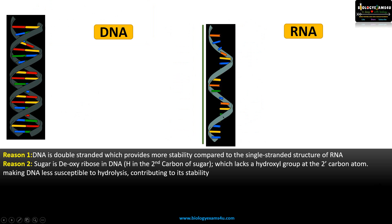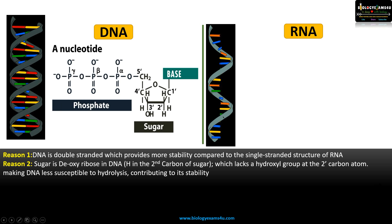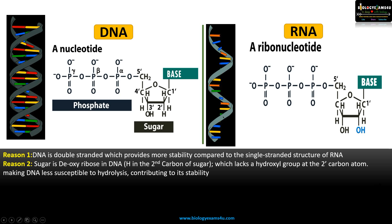Reason number two: in DNA the sugar is deoxyribose. A DNA nucleotide is made up of a phosphate, a sugar, and a nitrogenous base. In deoxyribose, the second carbon position has only H — the hydroxyl group is absent. Whereas in RNA, the second carbon position has a hydroxyl group, making it more susceptible to hydrolysis. So the lack of this OH group in DNA makes DNA more stable and less susceptible to hydrolysis.